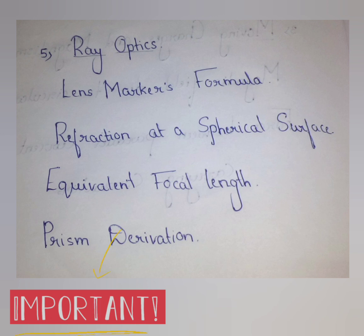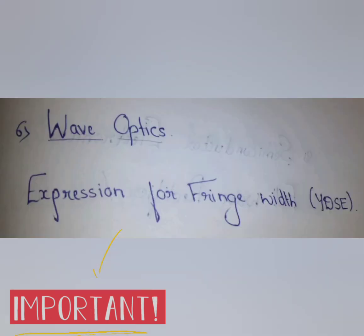From the fifth chapter, Ray Optics, the important questions are: lens maker's formula, refraction at a spherical surface, equivalent focal length, and prism derivation.